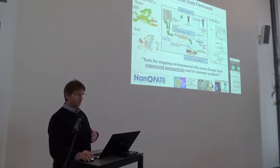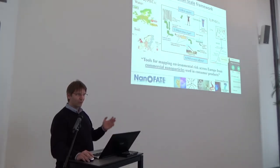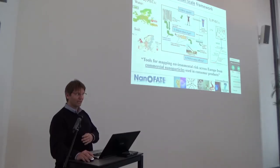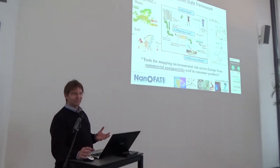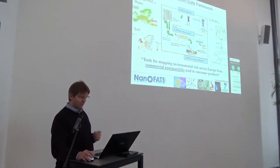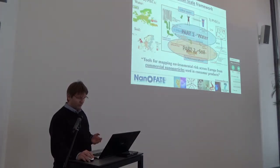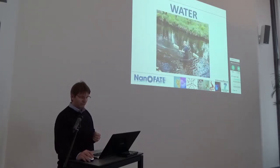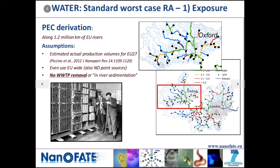The exercise you're going to do later is basically to help you realise how basic the data is that we start with, and how large the safety factors placed at the end are — so you can be more realistic about what degree of detail is useful for modelling the middle bit. We'll have part one on water, then part two on soil, with exercises for both. For water, we've predicted exposure along all 1.2 kilometres of EU rivers.